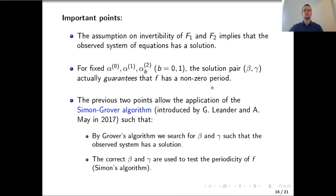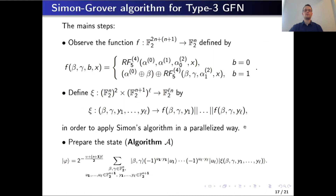In order to find beta and gamma, which are not known due to involvement of secret round keys, we employ Simon's and Grover's algorithms simultaneously in the context of the Simon-Grover combination introduced in 2017 by Leander and May. Roughly, we employ Grover's algorithm to find beta and gamma such that the observed system has a solution, and then test the periodicity of function f using Simon's algorithm.